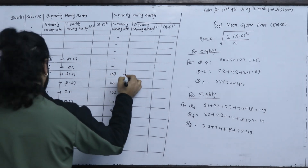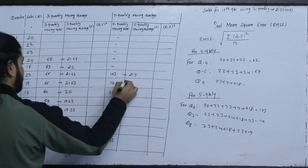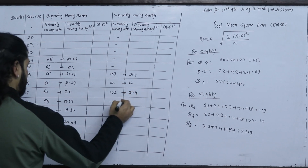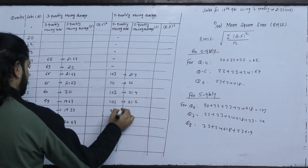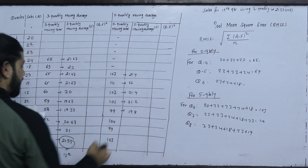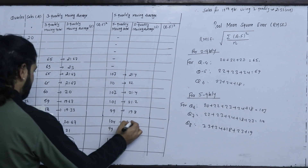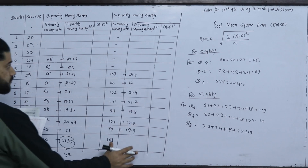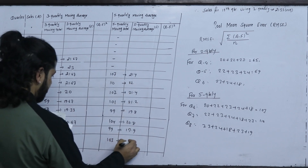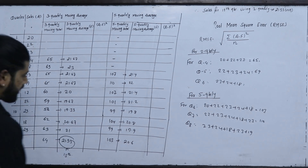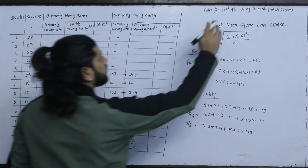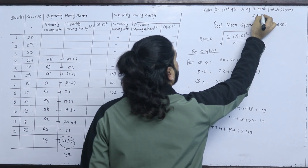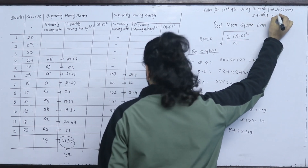The 5-quarterly moving averages: 107 divided by 5 is 21.4, 110 divided by 5 is 22, 101 divided by 5 is 20.2, 99 divided by 5 is 19.8, 104 divided by 5 is 20.8, 99 divided by 5 is 19.8. The 13th quarter forecast using 5-quarterly moving average is 20.6 thousand units.